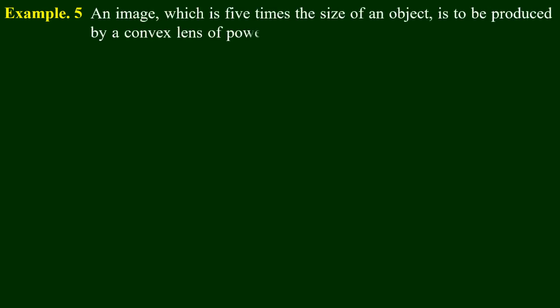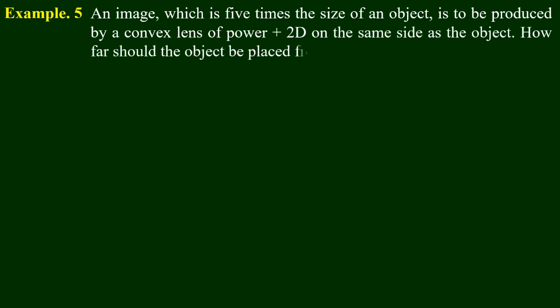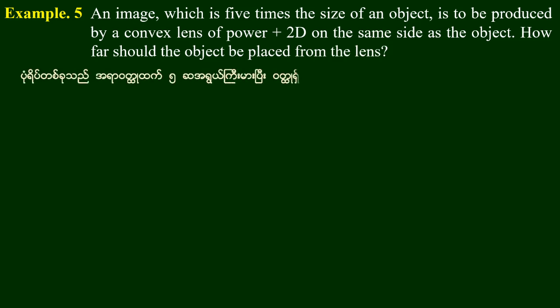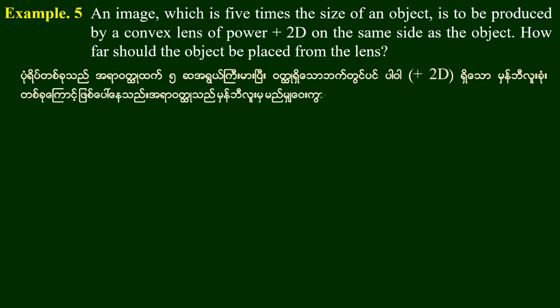The image which is 5 times the size of an object is to be produced by a lens of power plus 2. How far should the object be placed from the lens?